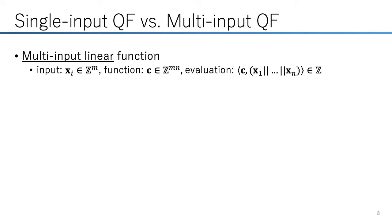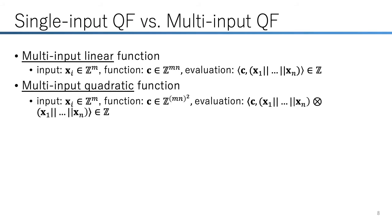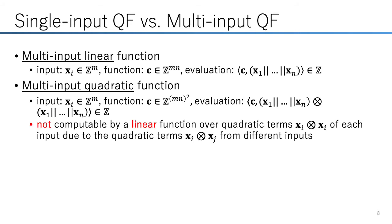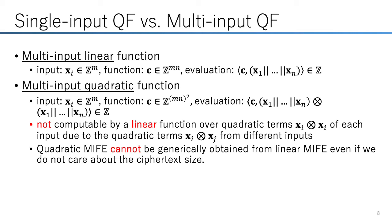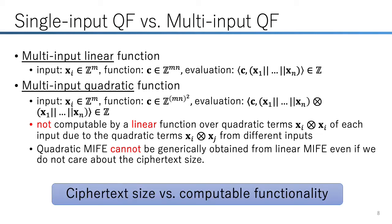A multi-input linear function is a multivariate linear function over all inputs, and a multi-input quadratic function is a multivariate quadratic function over all inputs. An important fact is that a multi-input quadratic function is not a linear function over quadratic terms of each input, because it also contains quadratic terms derived from two different inputs. So quadratic MIFE cannot be generically obtained from linear MIFE, even if we do not care about ciphertext size. Therefore, the situation is essentially different in the single-input and multi-input settings.